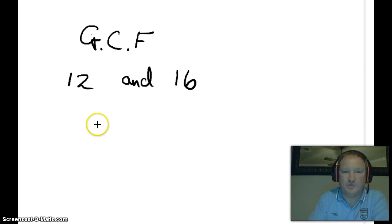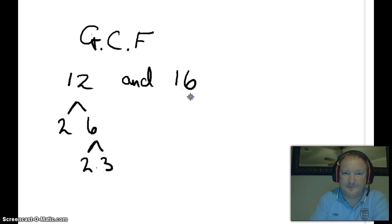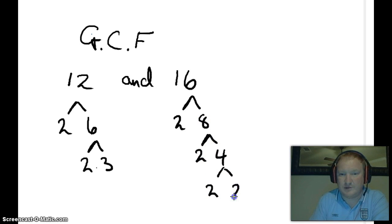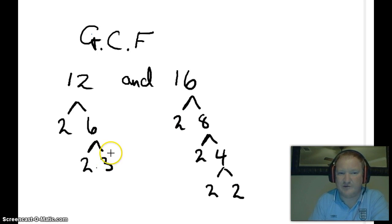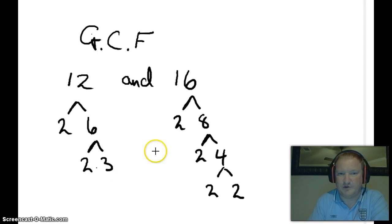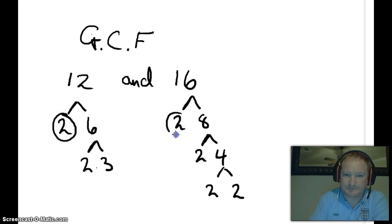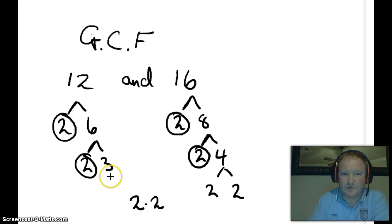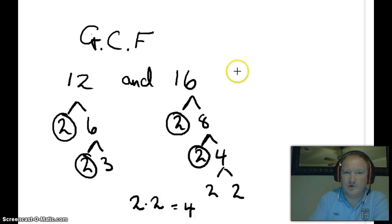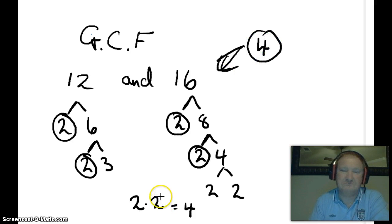Let's take another example: 12 and 16. We break down 12 as 2 times 6, then 2 times 3. We break down 16 as 2 times 8, 2 times 4, and 2 times 2. Obviously if you can spot the GCF quickly, do that. But this method works if you can't see it. We have a 2 and a 2 in common, and another 2 and 2 in common. 2 times 2 is 4, so the GCF of 12 and 16 is 4.